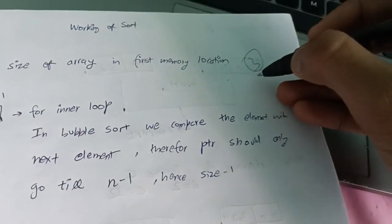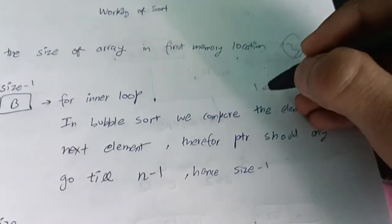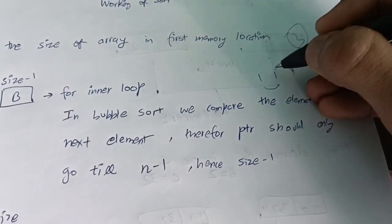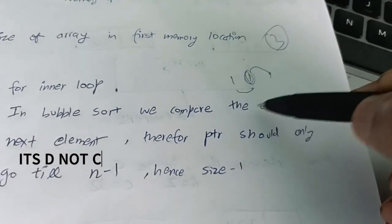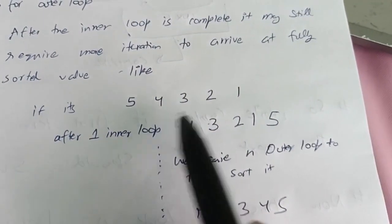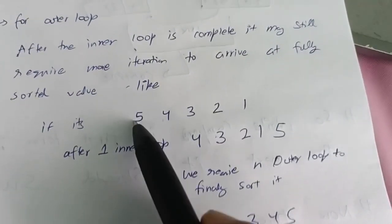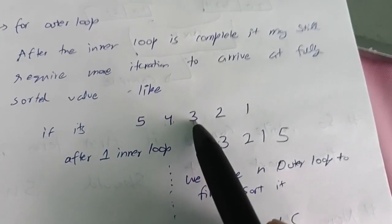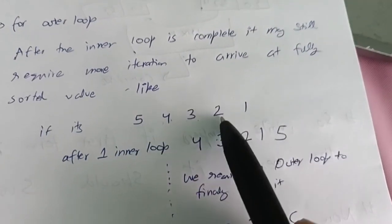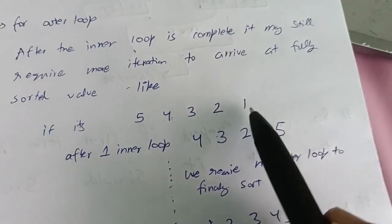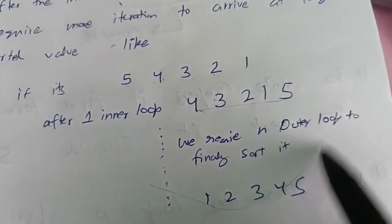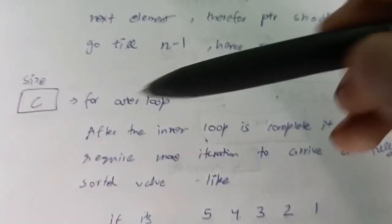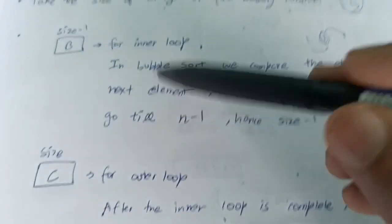For example if size is three, it should compare positions one-two and two-three, so we go till n minus one. Now, register C alone may not complete the sorting — for example with five, four, three, two, one, after one inner loop pass only the largest element bubbles to the end. So we have to do n number of outer loops. That's why we store the whole size inside register C.